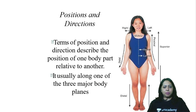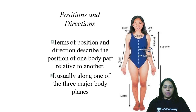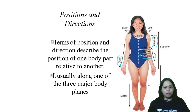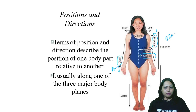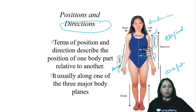Anything towards the midline is medial, and anything away from the midline is lateral. Proximal is near — towards the body. Distal is away — far. Superior is close to the head or higher than any other structure you are referring to. Inferior is close to the feet or lower than any structure you are referring to. You also have right direction and left direction. These are all directional terms.